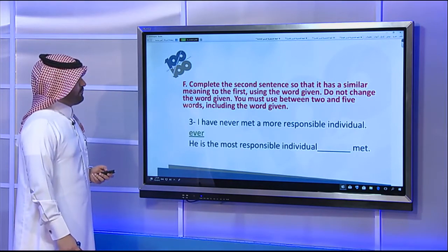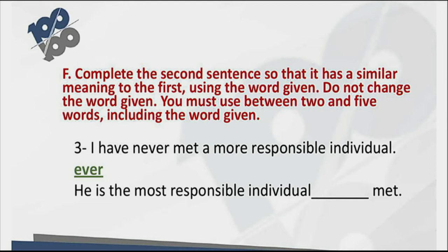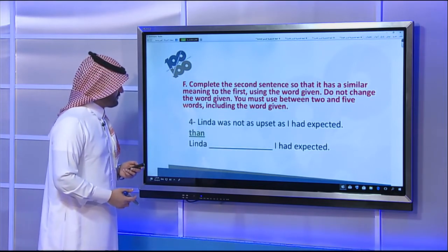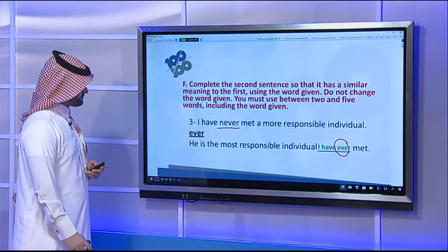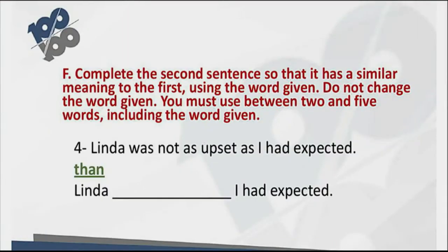Sentence three: 'I have never met a more responsible individual.' Given word: ever. Using present perfect simple with 'ever' instead of 'never' gives the same meaning: 'He is the most responsible individual I have ever met.' Never and ever convey the same meaning in this structure — 'never met a more responsible' equals 'the most responsible I have ever met.'